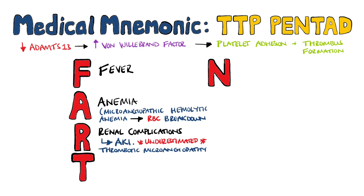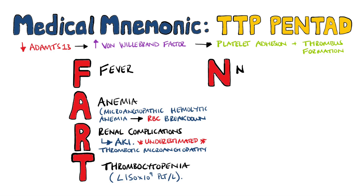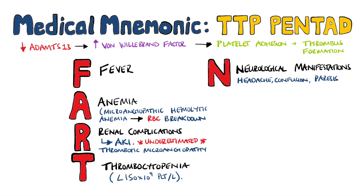Next, we have T for thrombocytopenia, which we should already know from the name, and then finally we have N for neurological changes, ranging from headache, confusion, and paresis, all the way up to a coma and stroke.